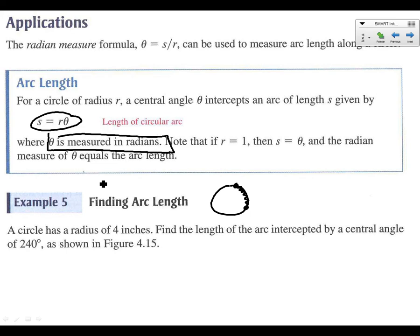So the first example here says we've got a circle that has a radius of 4 inches. And we want to be in the habit of keeping our units here. Units are going to be important. Find the length of the arc intercepted by a central angle of 240 degrees.